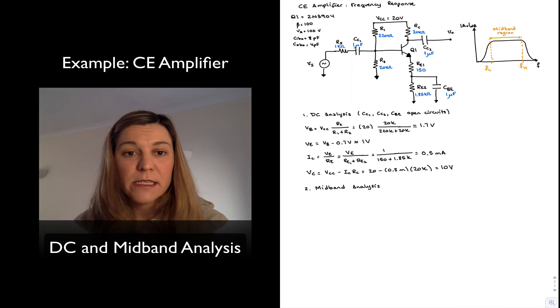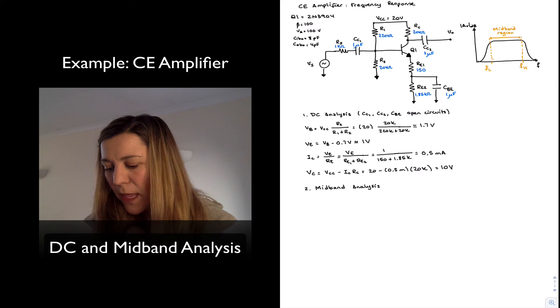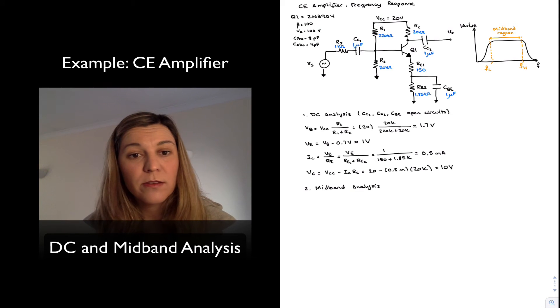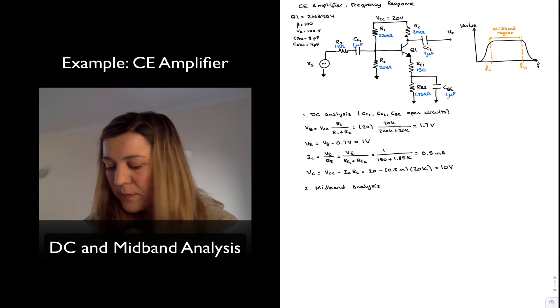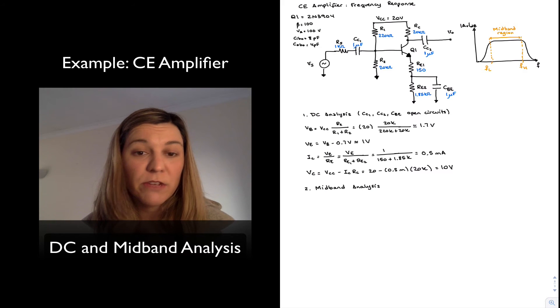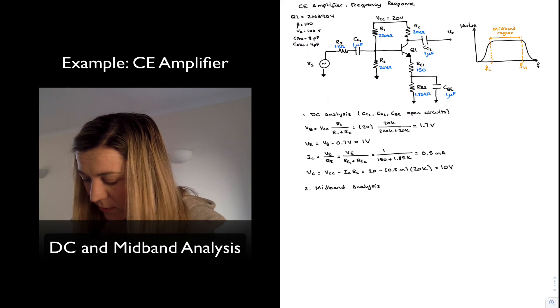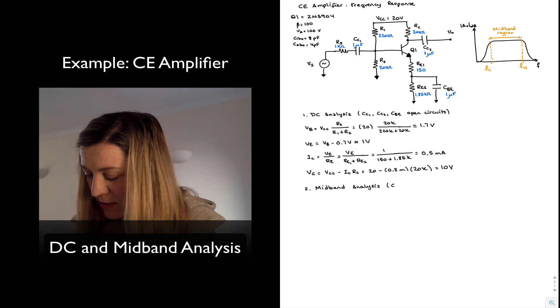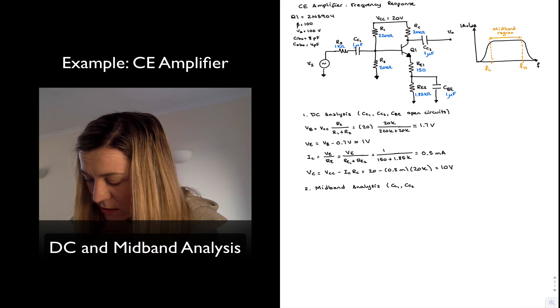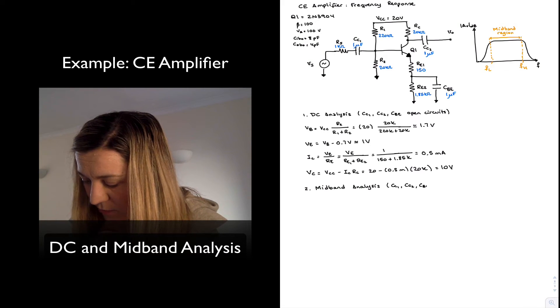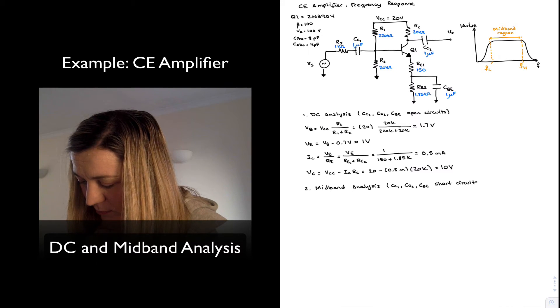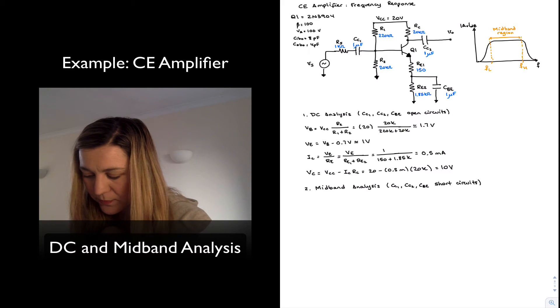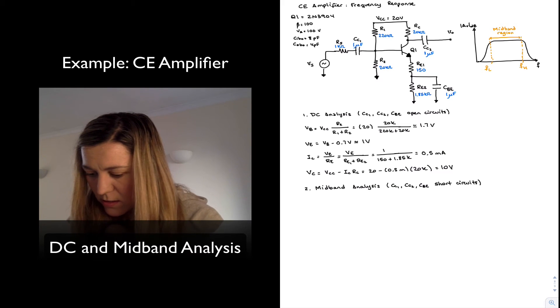Now for my mid-band analysis, I'm going to assume that the coupling capacitors, as well as the bypass capacitor, are acting as short circuits. That would be the case for any signal in the frequency range of interest, if I have designed the circuit correctly. So CC1, CC2, and CBE, I'm going to assume they're short circuits. Alright.